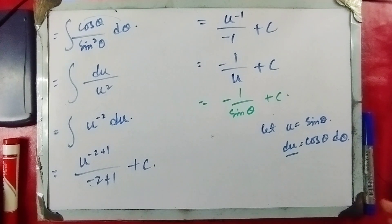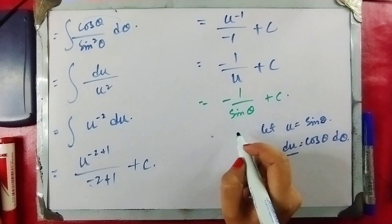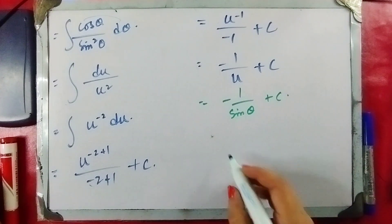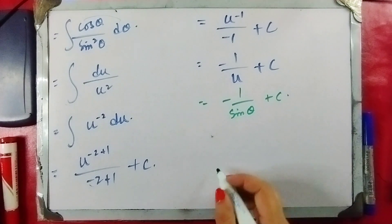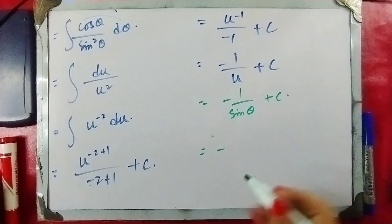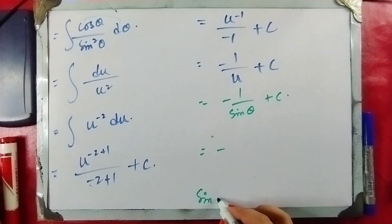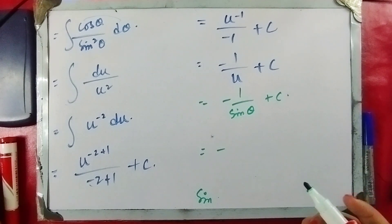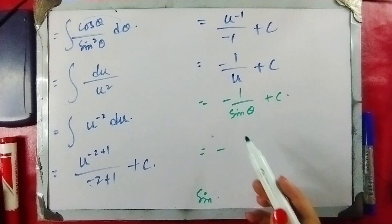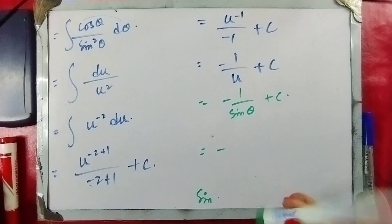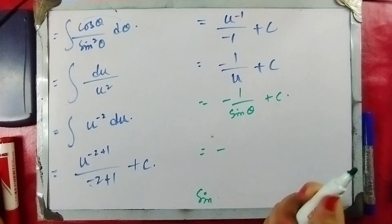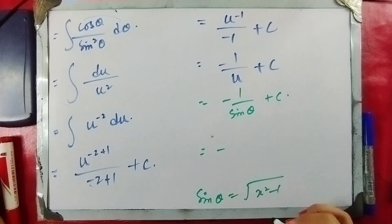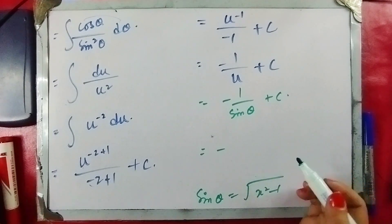Now we use the full trigonometric substitution — we need to find the value of sine of theta. Since we originally let x equal secant of theta, we need to express sine of theta in terms of x. We use the identity that sine equals perpendicular over hypotenuse, which gives us the value x squared minus 1.